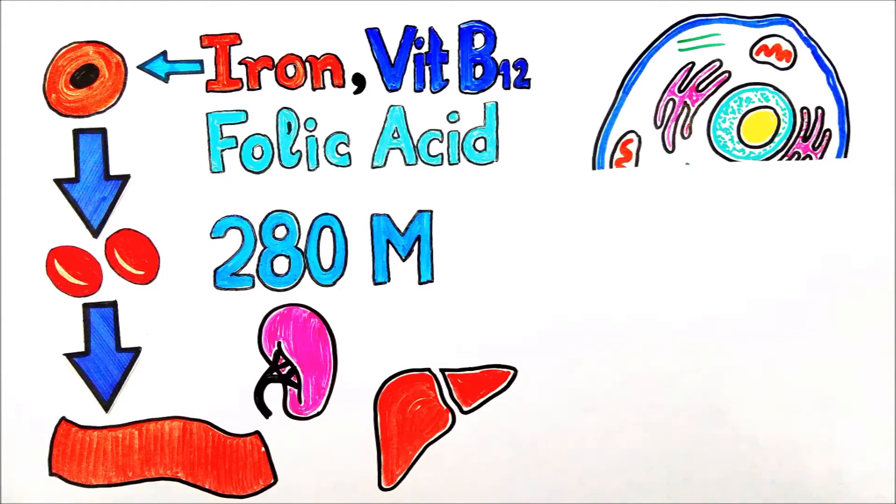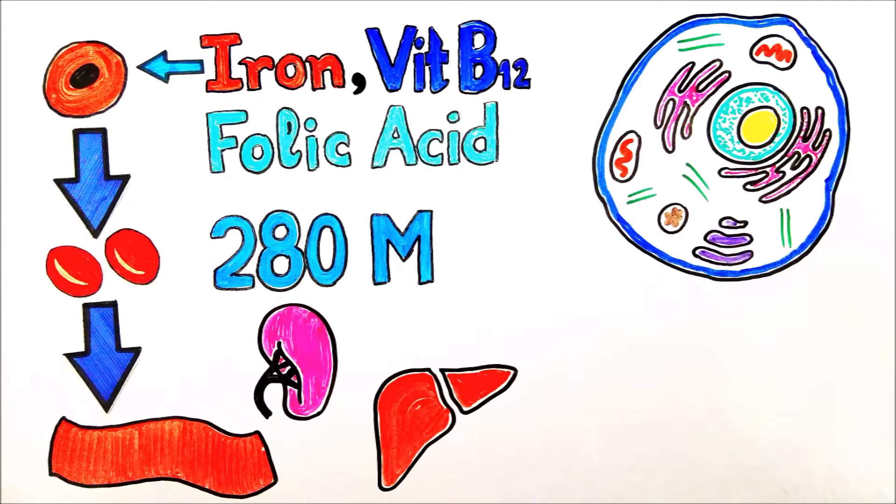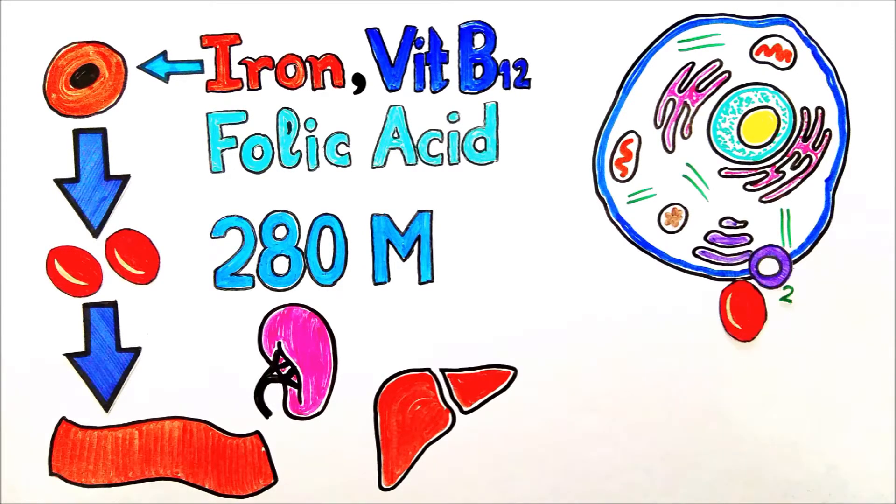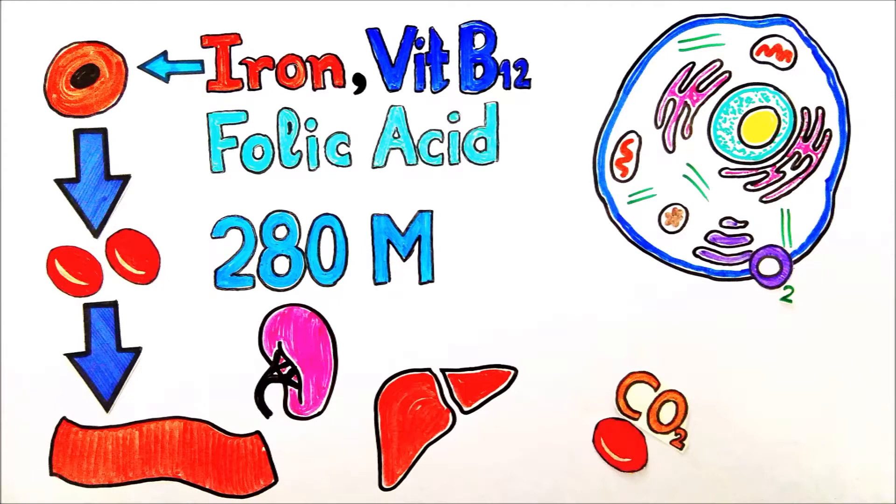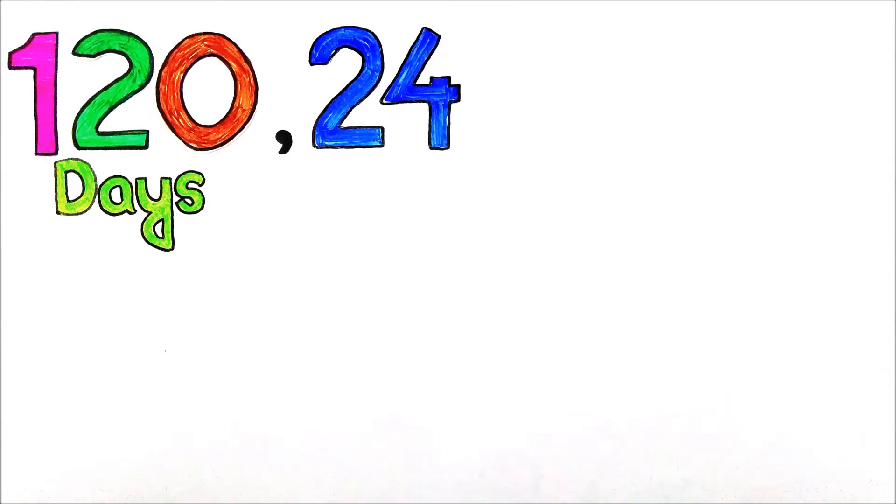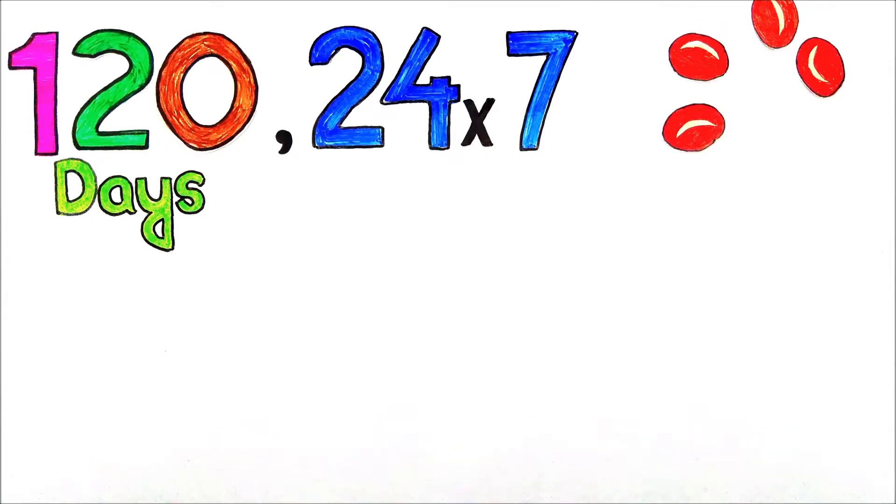They perform two vital functions in our body. One is to deliver oxygen to cells and other is to take away carbon dioxide from cells. The lifespan of RBC is approximately 120 days and they perform these two tasks 24 by 7 without complaining. But if it gets damaged or non-functional, it can be removed even before 120 days.